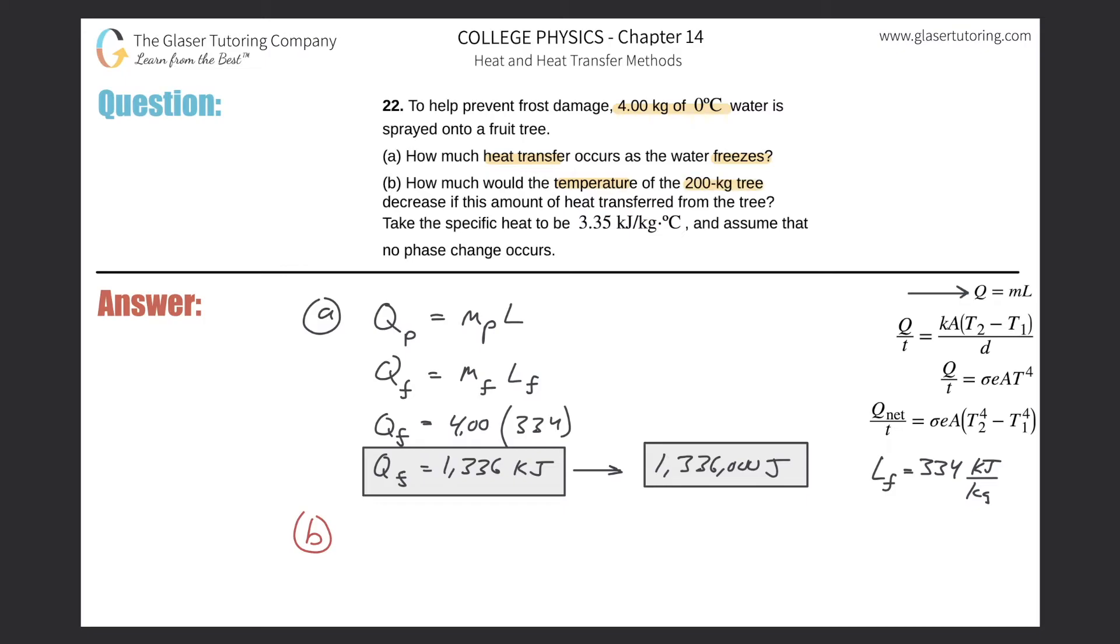So let's see what it says: How much would the temperature of a 200 kg tree decrease if this amount of heat transferred from the tree? Assume the specific heat to be 3.35 kilojoules per... So basically we're talking about heat transfer of an object, so no phase change occurs.